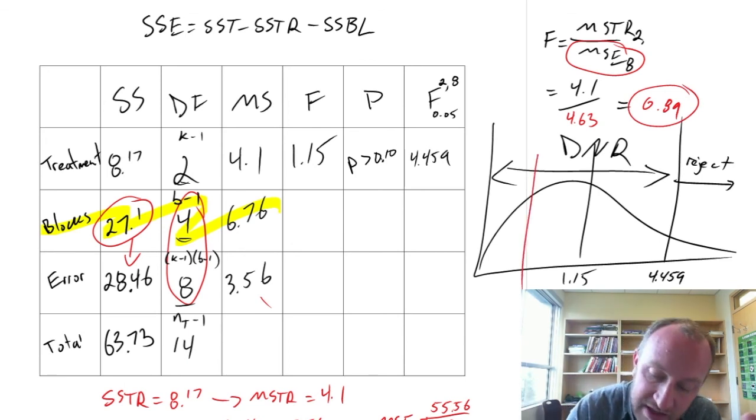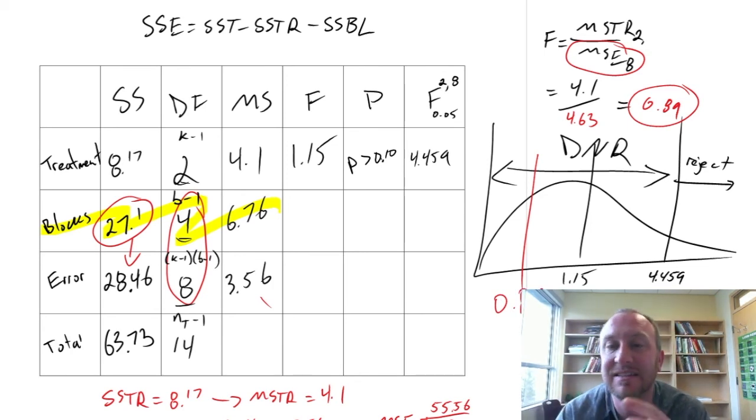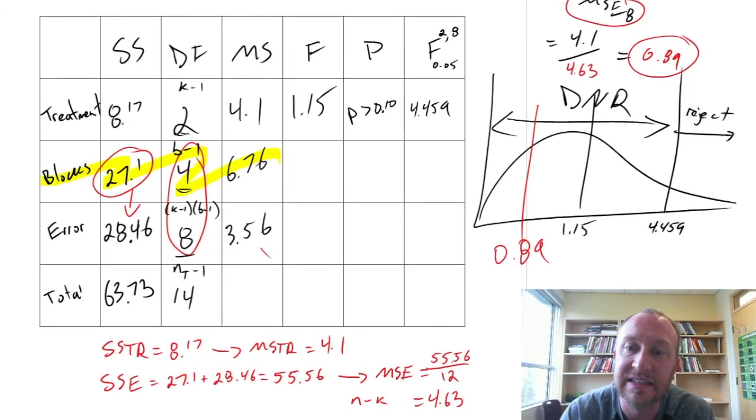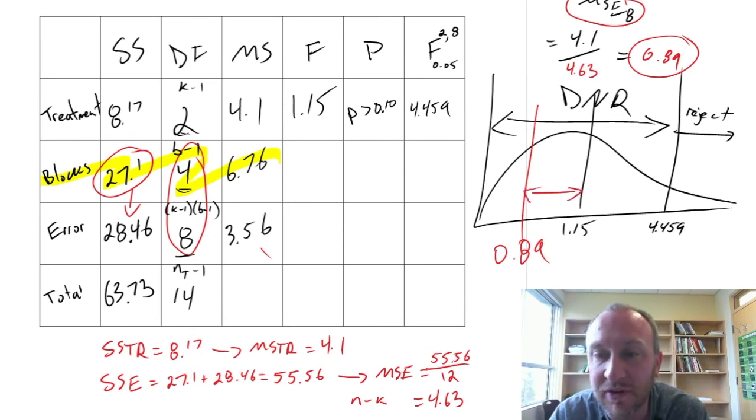It would have been even further down here, 0.89. Giving us still stronger evidence in favor of the null hypothesis. So you can see how, in different circumstances, blocking versus not blocking. In this case, it was a difference between a test statistic of 1.15 and 0.89. It didn't change our conclusion.